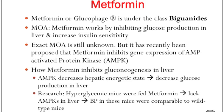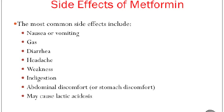How metformin inhibits gluconeogenesis in the liver is that AMPK decreases the hepatic energetic state and therefore decreases glucose production in the liver. Research has shown that hyperglycemic mice fed metformin — which were shown to lack AMPK in the liver — had blood glucose levels comparable to wild-type mice.